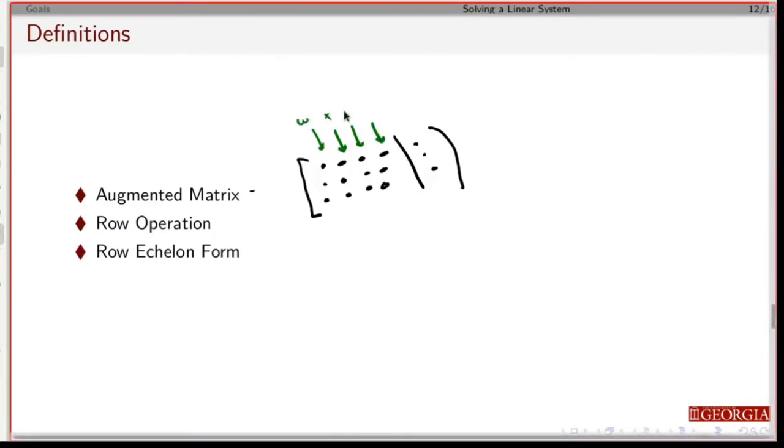So in the previous example, this was W, X, Y, Z, and everything in here was the right-hand side.